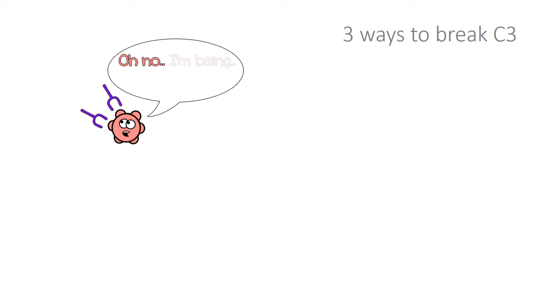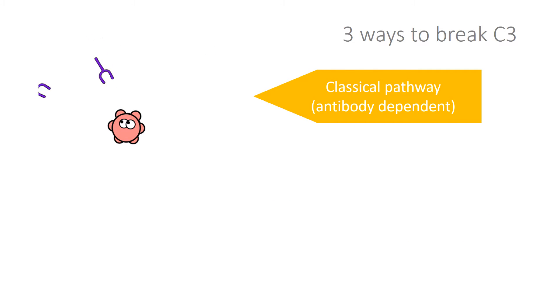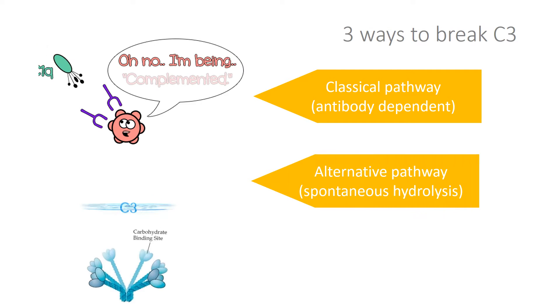The complement cascade may be activated by one of three pathways: 1. Classical pathway, 2. Alternative pathway, 3. Lectin pathway.